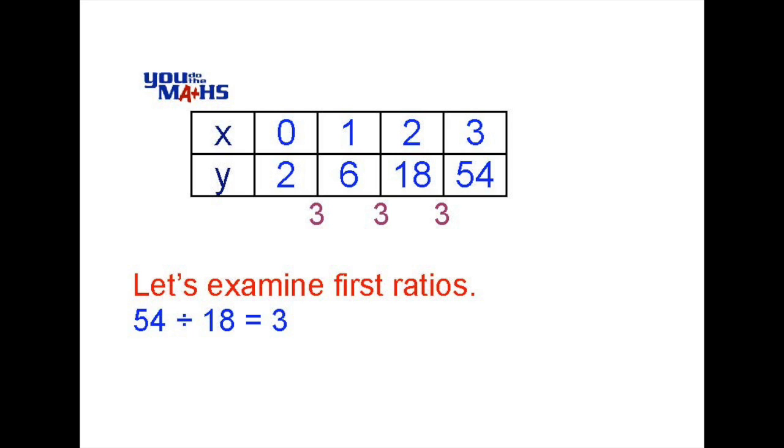So what we have here is a common first ratio. And if the first ratio is common, what we have is what's called an exponential relationship. And we'll have a look at how we develop the rule.